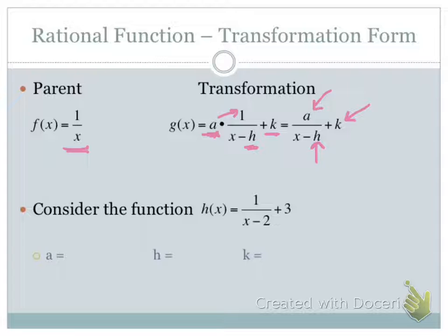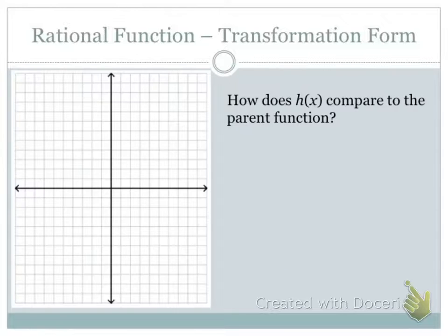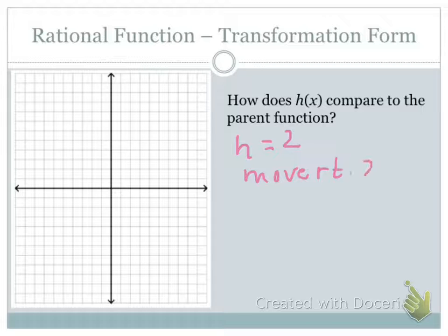If we look at the function h of x equals 1 over (x minus 2) plus 3, we can identify a as 1 — the number on top — h as 2, because that's what's being subtracted from x on the bottom, and k as 3, because that's the number being added at the end. An a of 1 means no vertical stretch or shrink and no reflection. An h of 2 means moving to the right 2 units, and a k of 3 means the graph moves up 3 units.